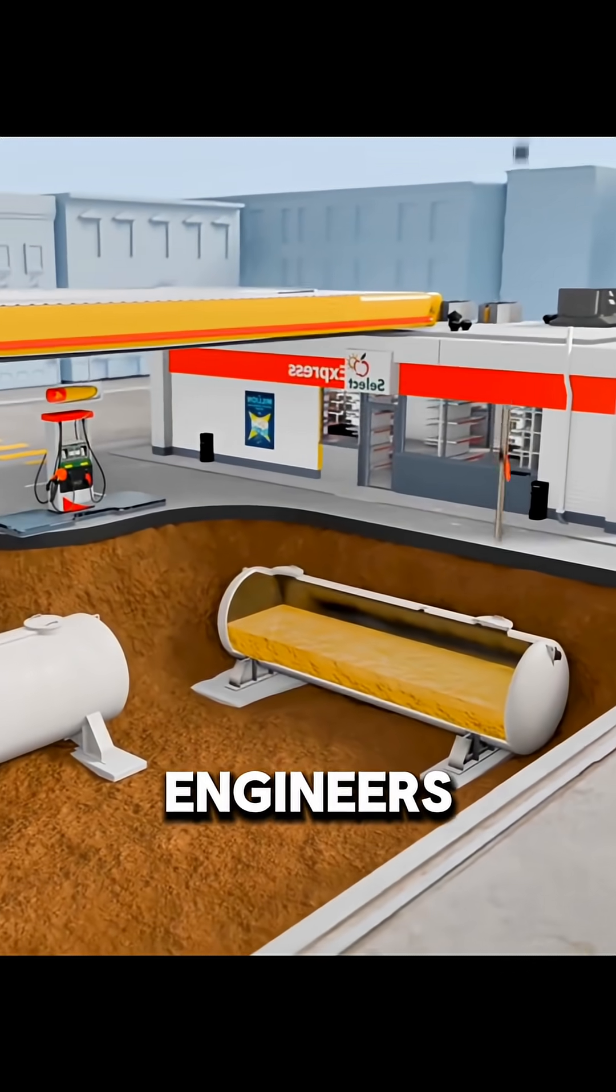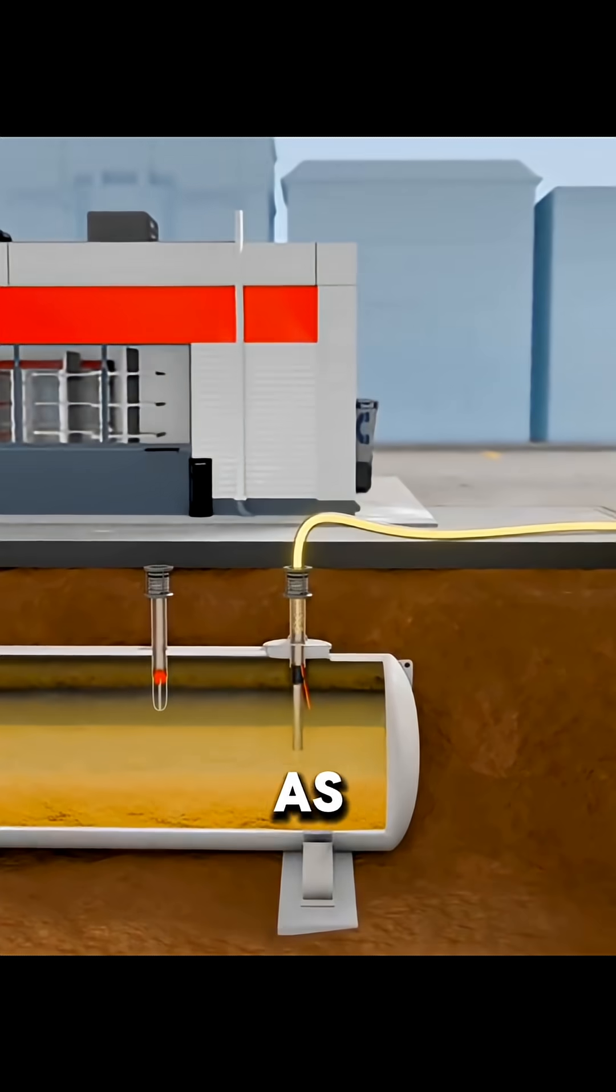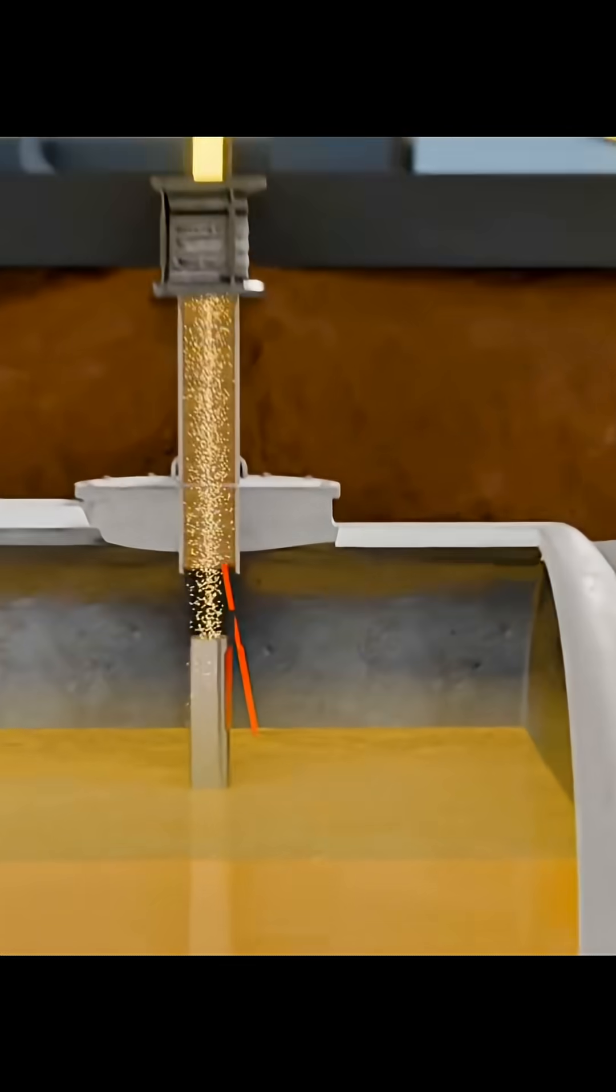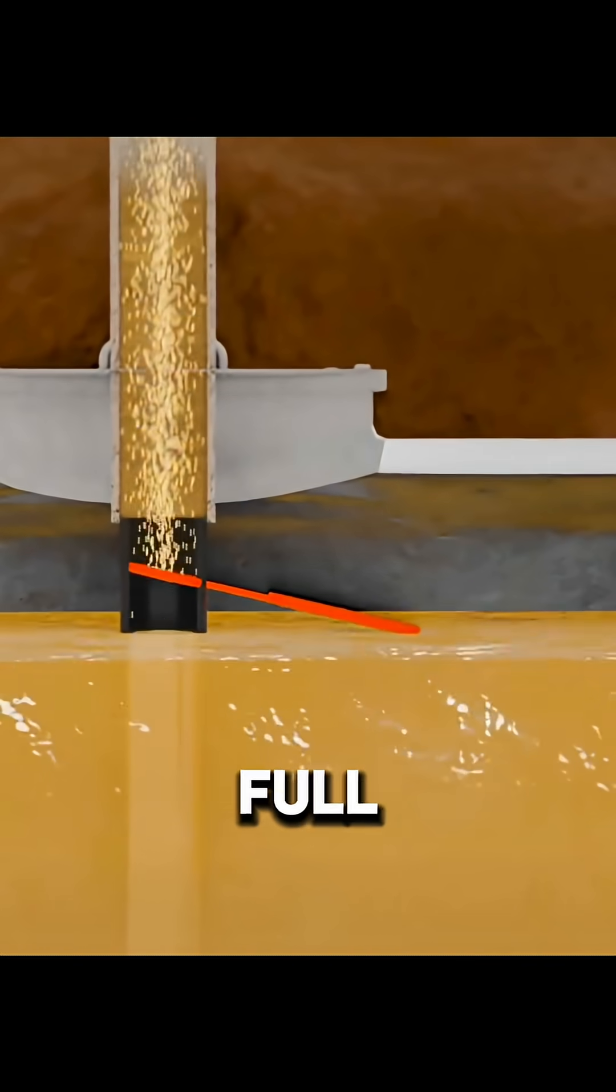To prevent this, engineers added two safety systems. As the delivery truck pumps fuel in, a valve closes once the tank reaches full capacity.